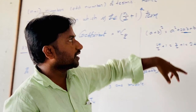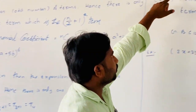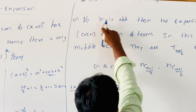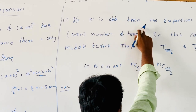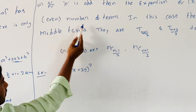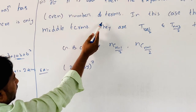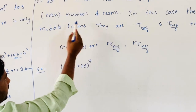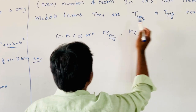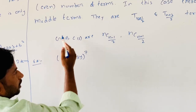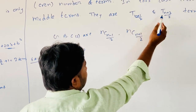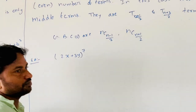Now let us discuss another case: if n is odd. If n is odd, then the expansion of (x + a)^n has n plus 1 number of terms. In this case, there are two middle terms: T(n+1)/2 and T(n+3)/2.